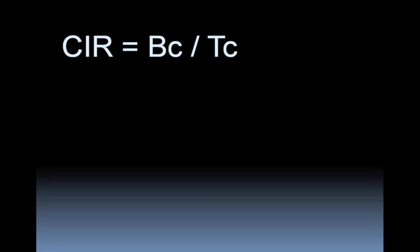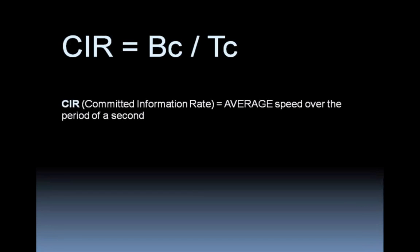Here's the overriding formula. The CIR, the committed information rate, equals the Bc divided by the Tc. Now let's talk about these different variables. The CIR, the committed information rate, this is the average, and I emphasize the average speed over the period of a second. If your CIR is 64,000 bits per second and your line speed were maybe double that, 128,000 bits per second, we're going to show you graphically here in just a moment how we can send at less than the line rate. We can send at half the rate for example. How's that possible?